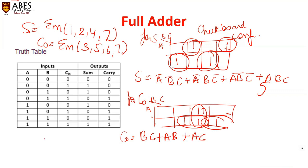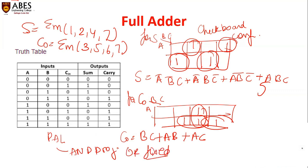In PAL, the AND gate is programmable but the OR gate is fixed. This gives simplicity, but there is one disadvantage — because the OR gate is fixed and the AND gate is programmable, it is not as flexible as a PLA.